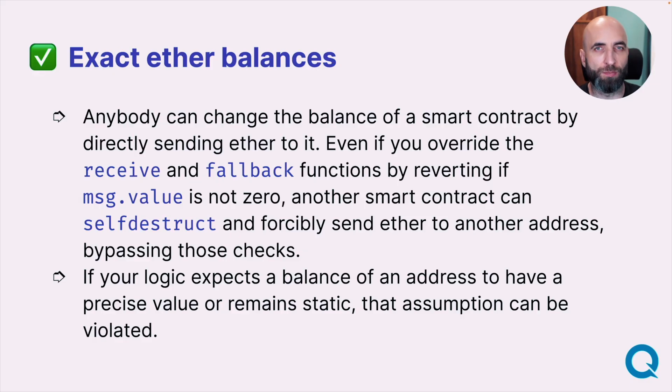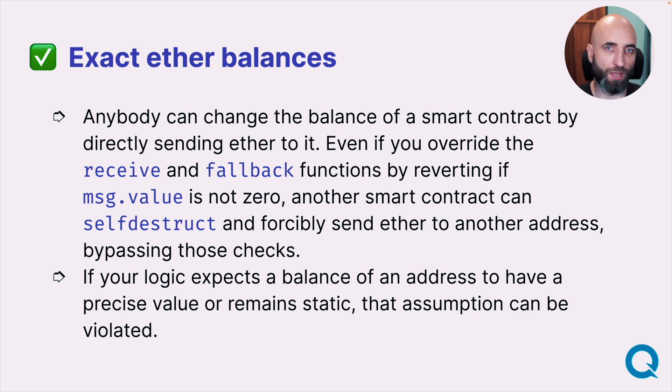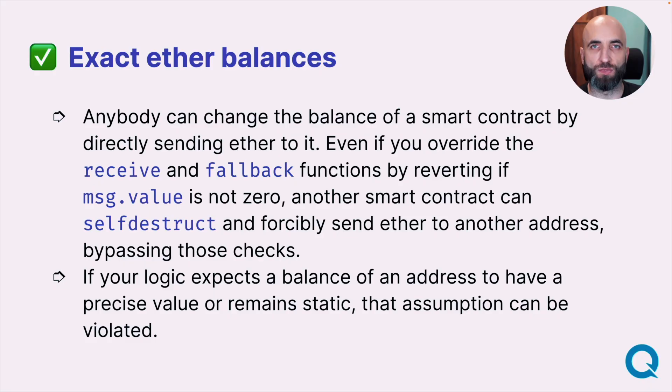Relying on exact ether balances in your smart contract is something you should never do. Anyone can change the balance of a smart contract by directly sending ether into it. Even if you disable that, it's still possible via a self-destruct function in another contract that forcibly sends ether to your address — and there is no way to prevent it. So don't build logic around exact ether balances.